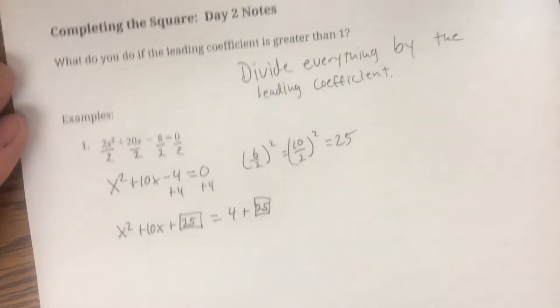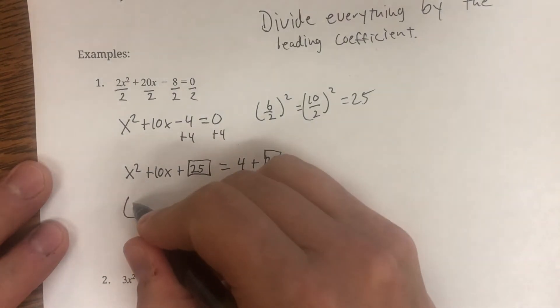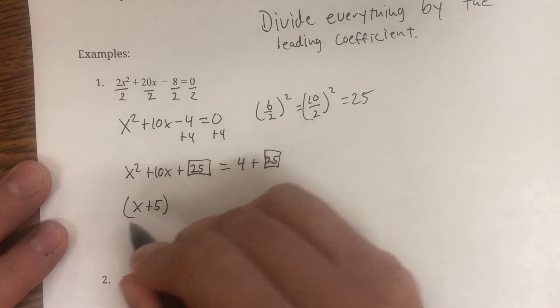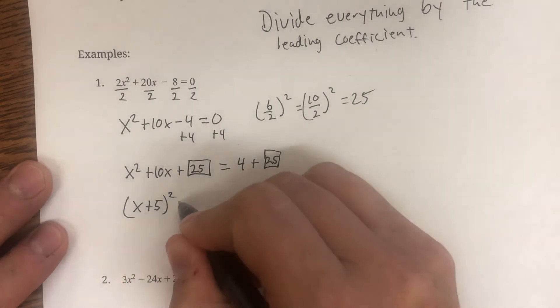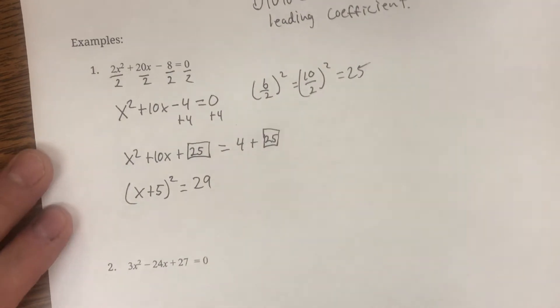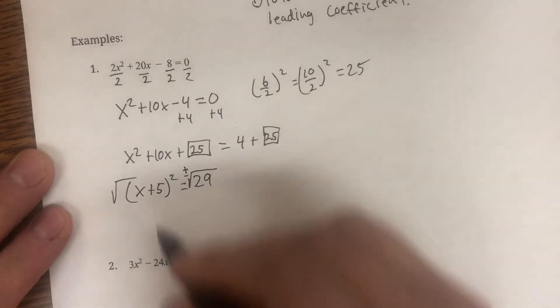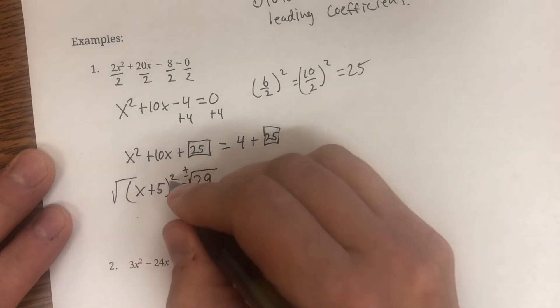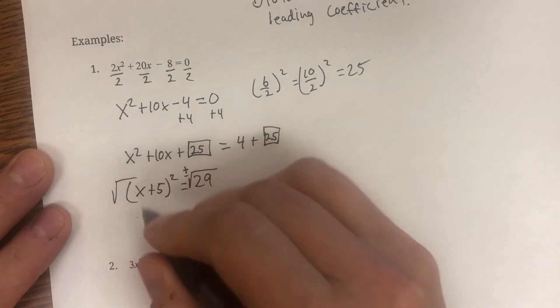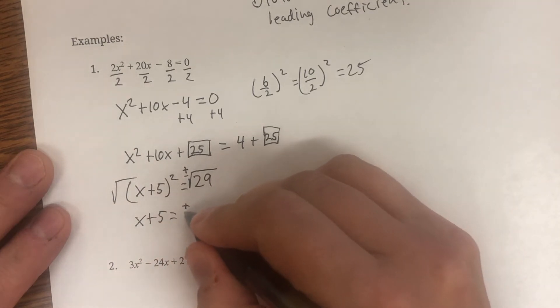Now we have our perfect square trinomial. The middle term is positive. So we're going to have an x plus squared of 25 is five. x plus five squared equals four plus 25. That's 29. Next step, take the square root of both sides. Don't forget the plus and the minus.